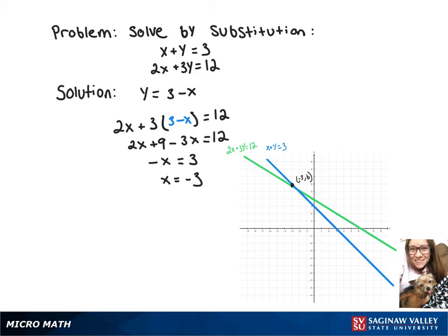So now we can sub that x back into our first equation and get negative 3 plus y equals 3. When we add the 3 over, we get y equals 6.